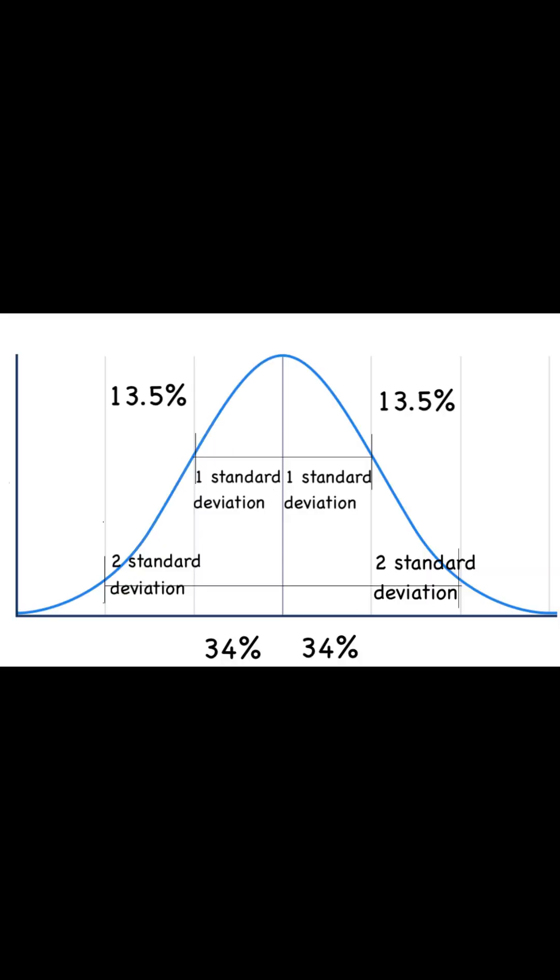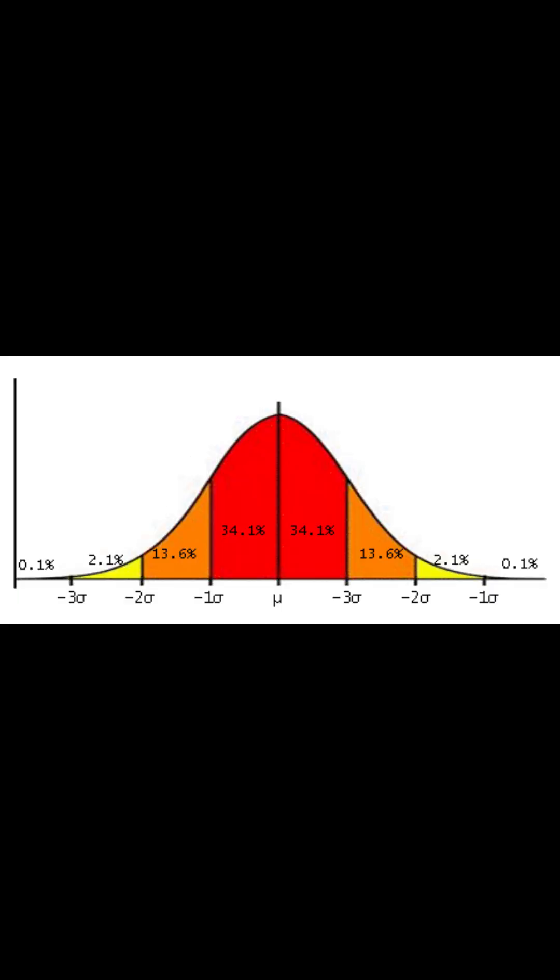Now here's where it gets interesting. About 68% of the data under a normal curve lies within one standard deviation of the mean. About 95% lies within two, and roughly 99.7% falls within three. This is known as the empirical rule, and it allows us to make quick estimates about probabilities without doing complicated calculations.